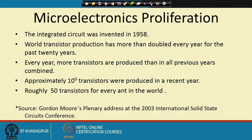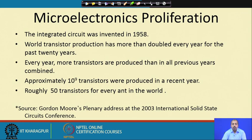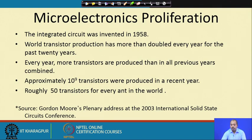The integrated circuit was invented in 1958. World transistor production has more than doubled every year for the past 20 years. You can imagine the amount of functionality becoming digital every year. More transistors are produced each year than all the previous years combined.